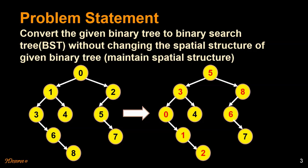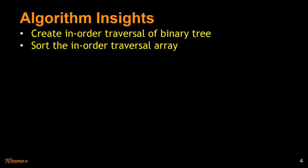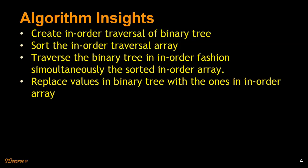Let's look at some of the algorithm insights for achieving this. First, we are going to do a traversal of the given binary tree in an inorder fashion, then we will sort that inorder array. After sorting, we are going to traverse the binary tree as well as the sorted inorder array simultaneously. At each node of that binary tree we are going to replace the values at that node with the values in the corresponding elements of that inorder array.